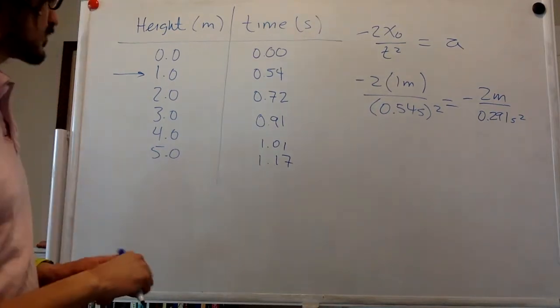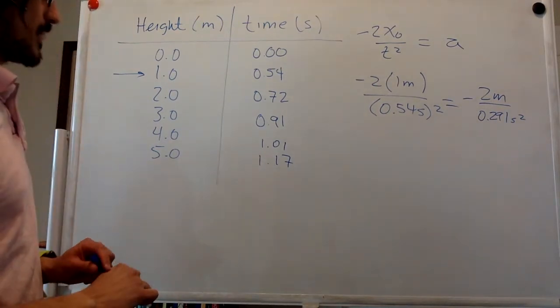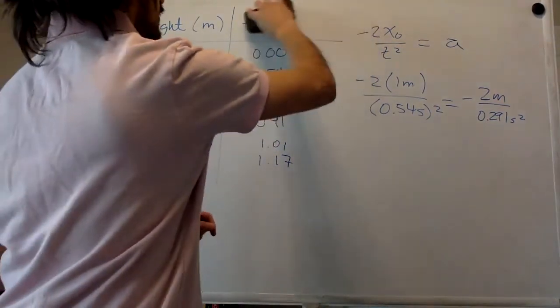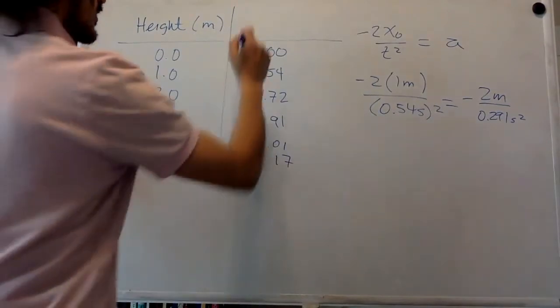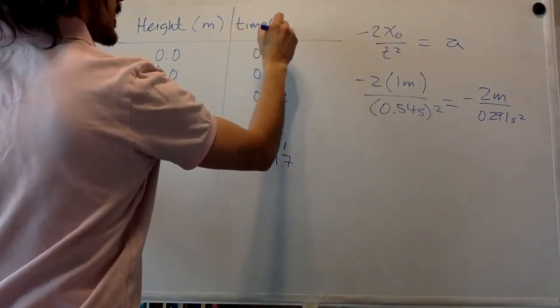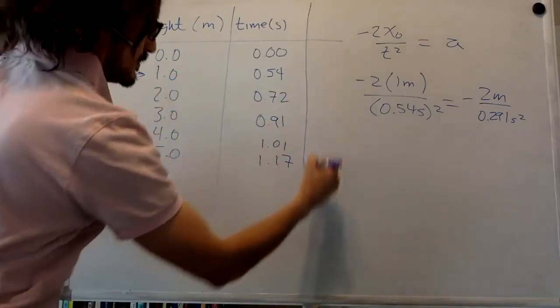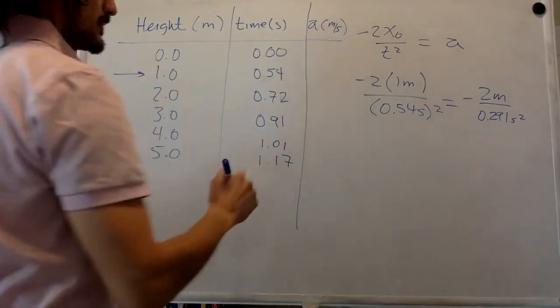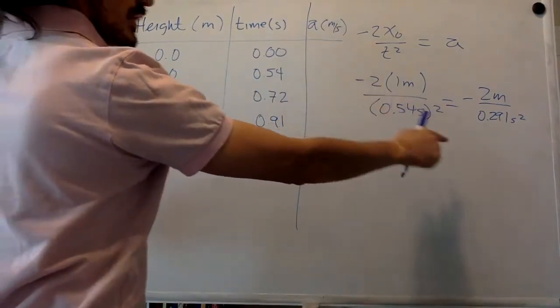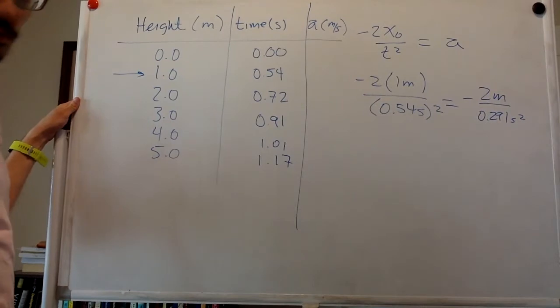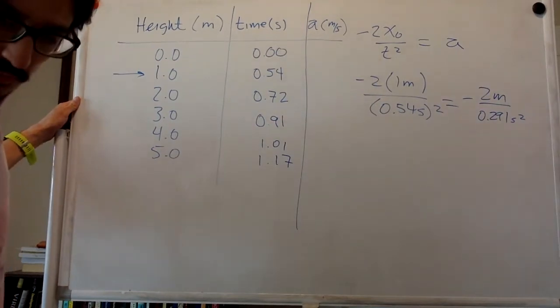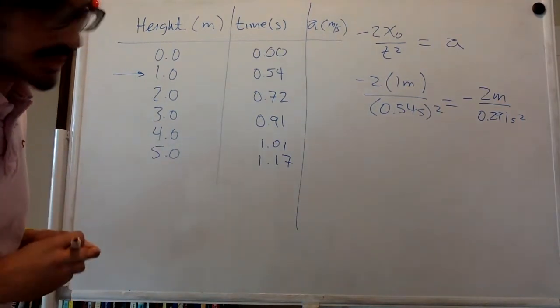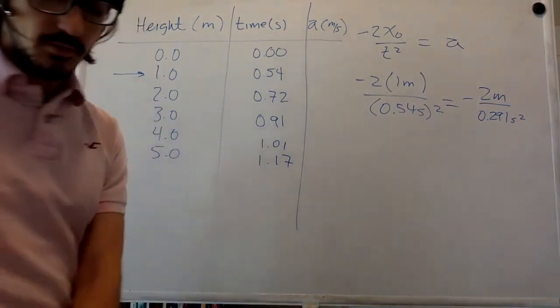Actually, except for the 0.54 squared. So this is going to be minus two meters divided by 0.291 second squared. I'm going to make this one a little bit smaller. So time in seconds. And I'm going to put the acceleration over here in meters per second. So the first one is negative two divided by 0.291. And that is equal to 6.85, or 6.86. I'm going to use a different color.